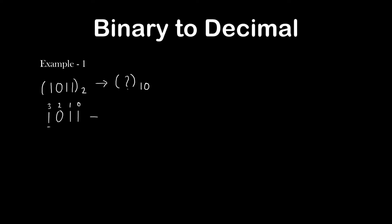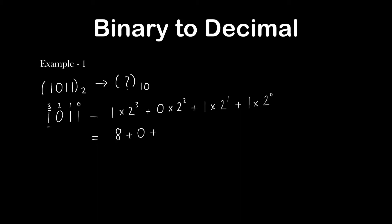The first digit is 1, so we write 1 multiplied by 2 to the power 3, since its position value is 3. Similarly, multiply the remaining digits with 2 to the power of their respective position values. Finally, add all the products to get the result. The result we get is 11, which is the decimal form of the given binary number 1011.